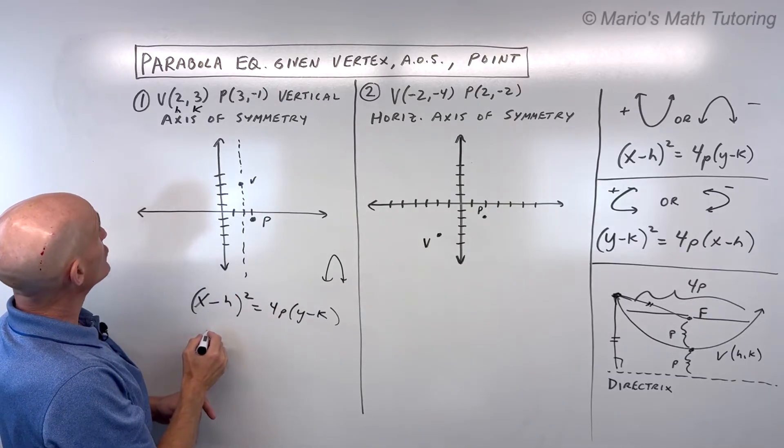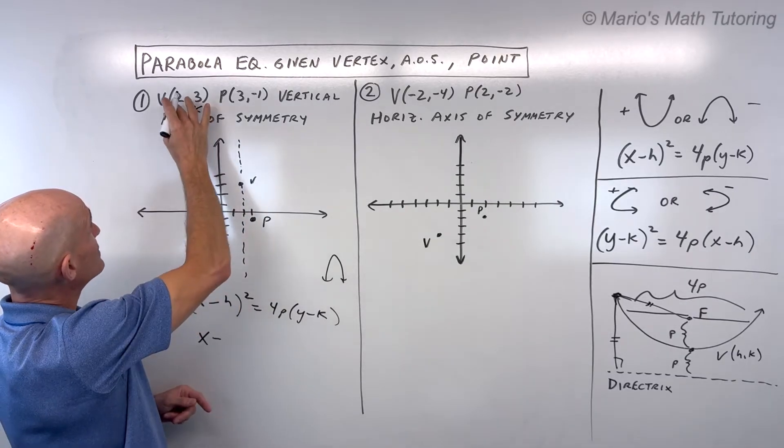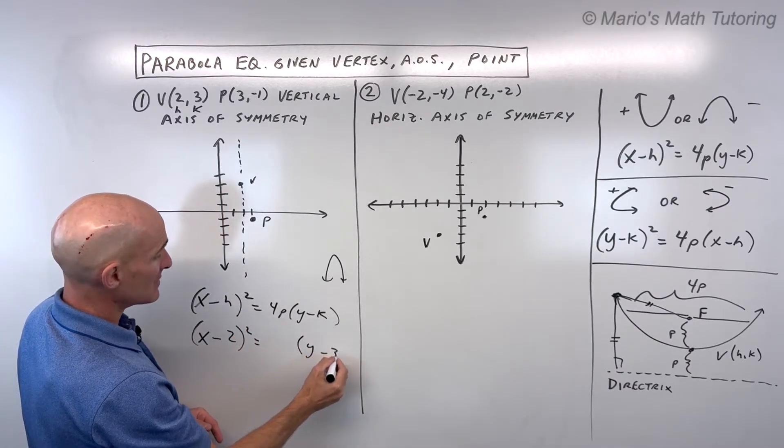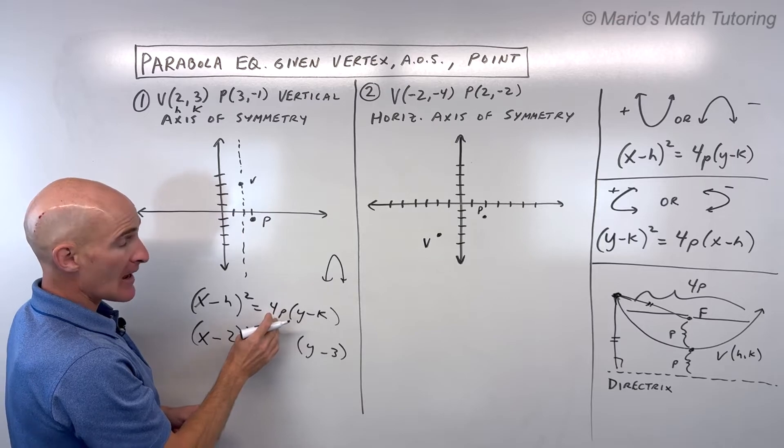So let's go ahead and write what we know so far. So we have x minus the x-coordinate of the vertex, squared, and y minus the y-coordinate of the vertex, and now this P.